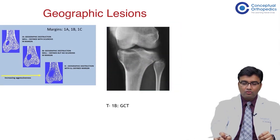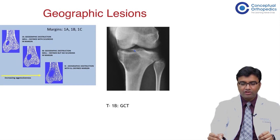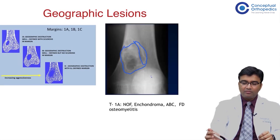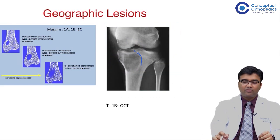Type 1b has a lytic type of destruction but with defined margins and no sclerosis. You can see it is not as well-demarcated compared to type 1a where sclerosis is visible. Type 1b is mostly seen in giant cell tumors.